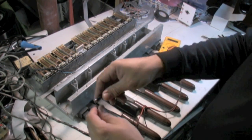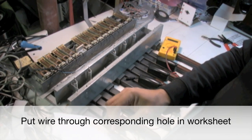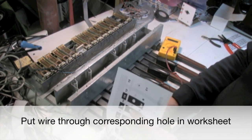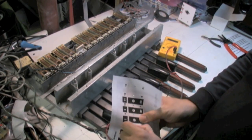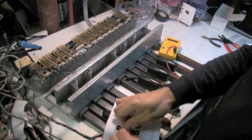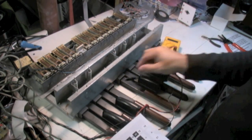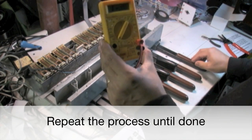Once you see a reading on the meter, take the wire and poke it through the corresponding hole in the worksheet. Repeat the process until you're done.